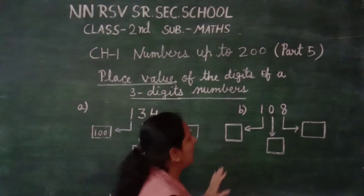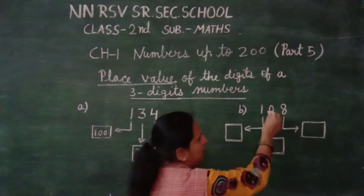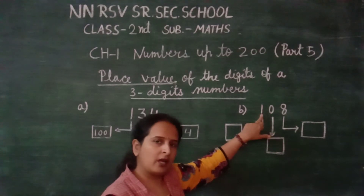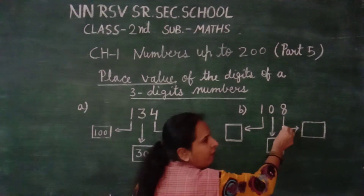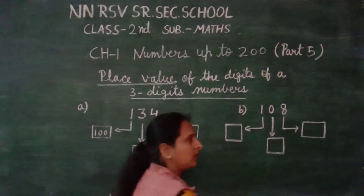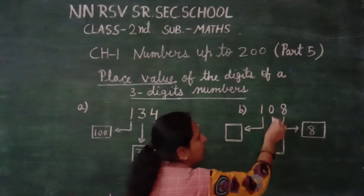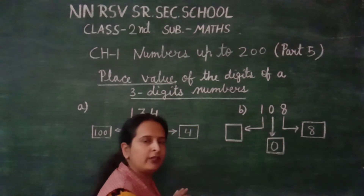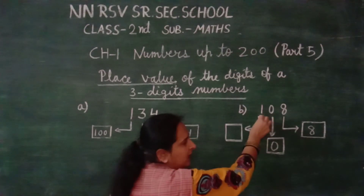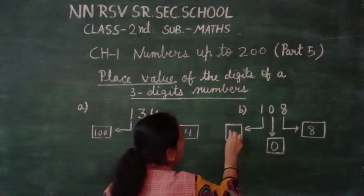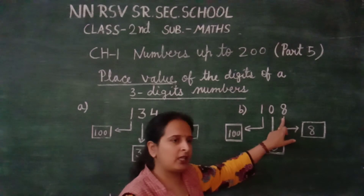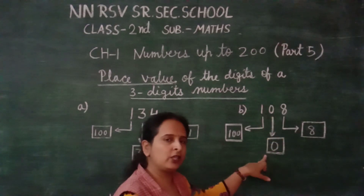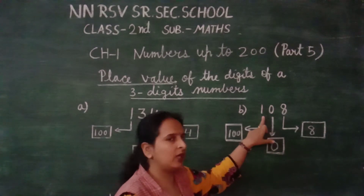Moving to the second question. Here is 108. 8 is in the 1's place, 0 is in the 10's place, and 1 is in the 100's place. The place value of 8 is 8 ones, which we write as 8. The place value of 0 is 0 tens, which equals 0 — because when we multiply any number with 0, we get 0. And the place value of 1 is 100.